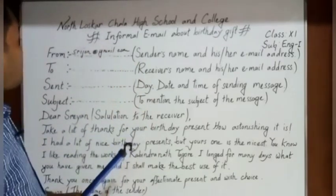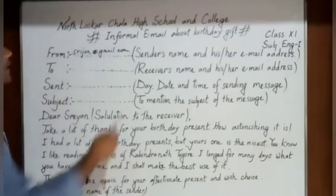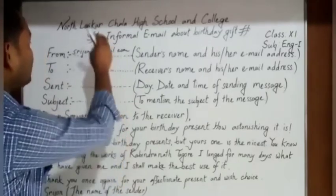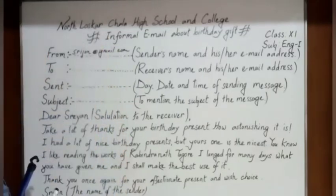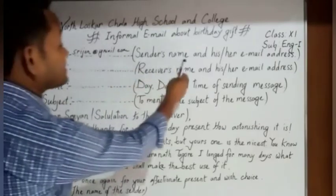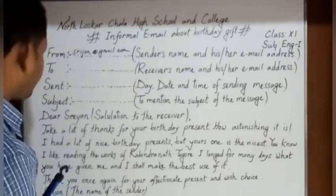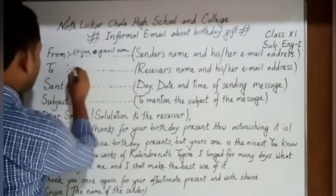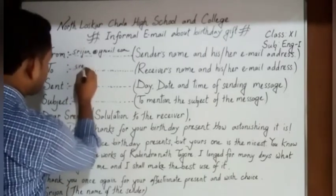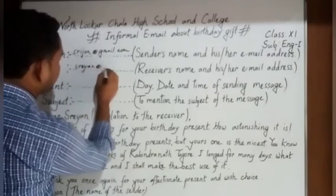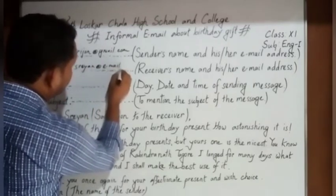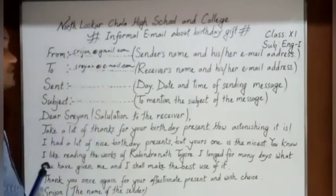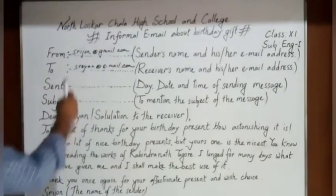Then the receiver's name and his or her email address — the receiver will receive the email. As I have mentioned, I have written 'Strison,' so you can use here: strison@email.com. After the 'at the rate' symbol, you can use gmail, hotmail, Facebook, Twitter, or any search engine you use.